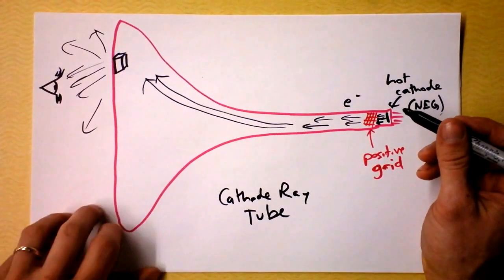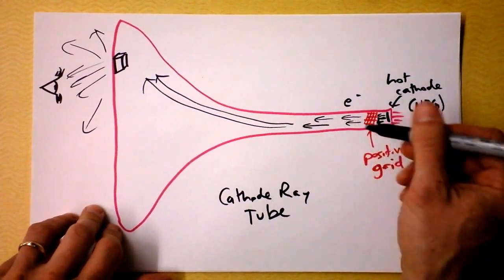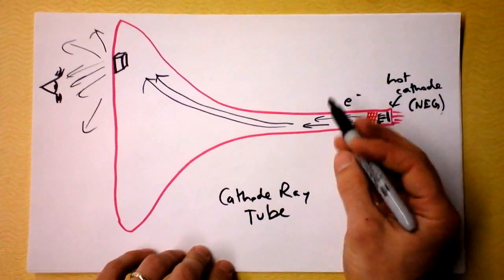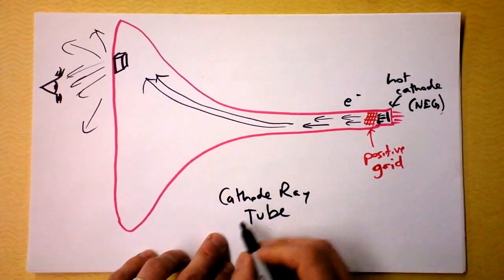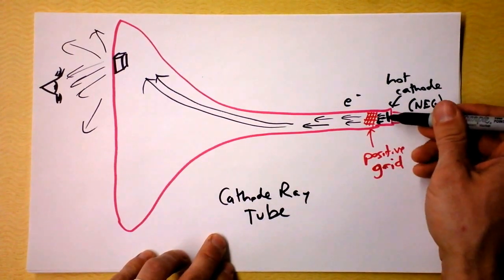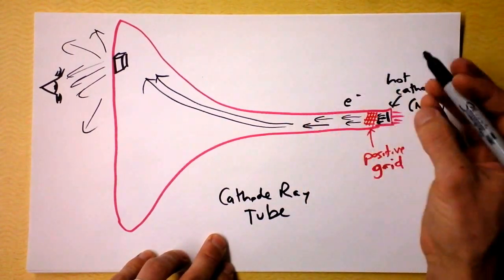Because here's the cathode, and this is a tube with no air inside of it. I guess if you had air in there, the electrons would hit the air and do all kinds of crazy things, probably emit x-rays and other exciting things because they're going really fast.